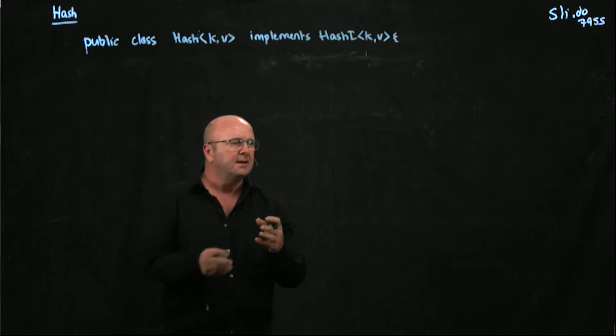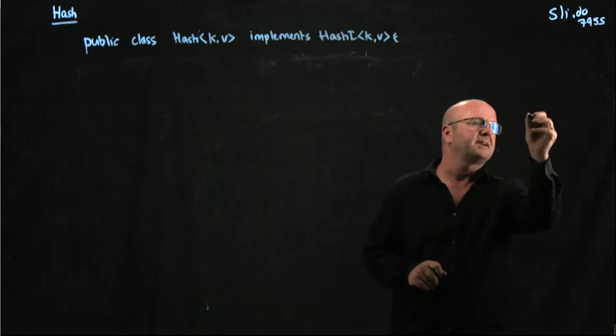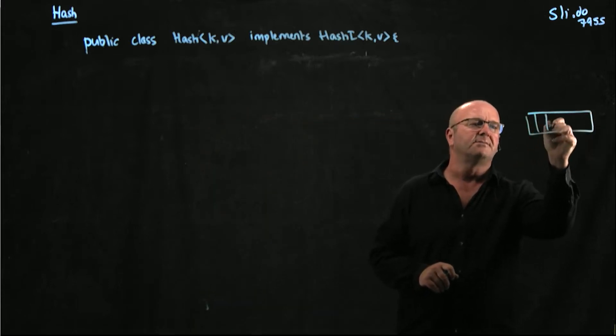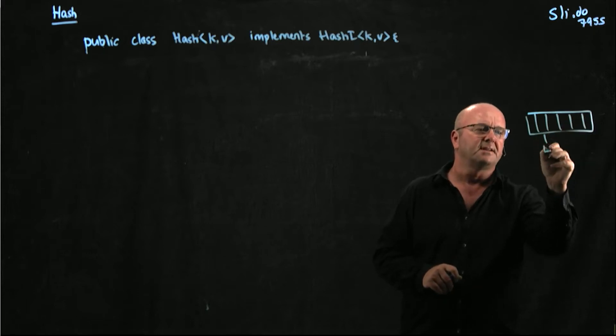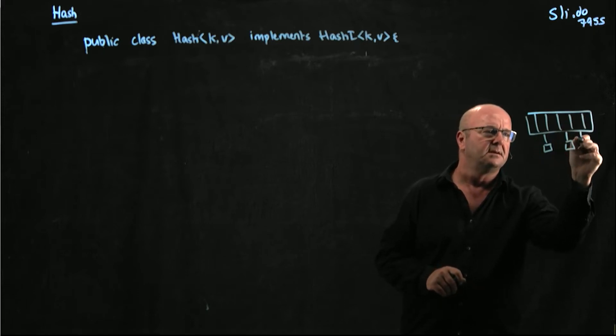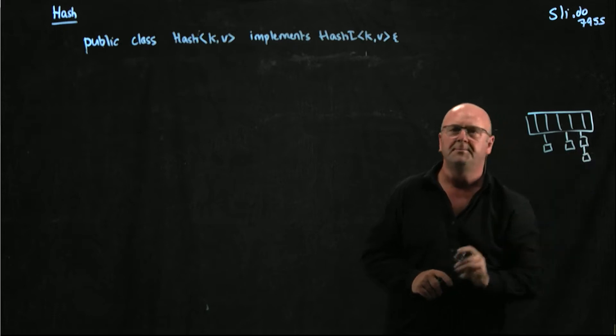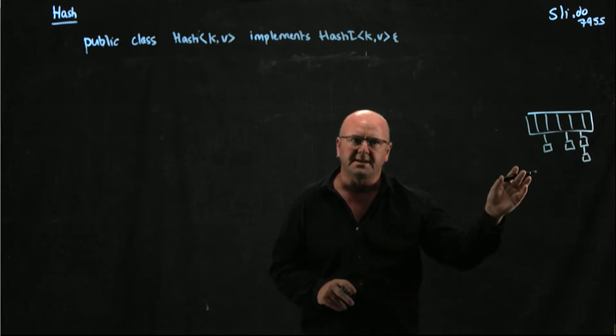So our globally scoped variables are going to be our array. So our hash, don't forget, is an array of linked lists. So we're going to have an array of linked lists.